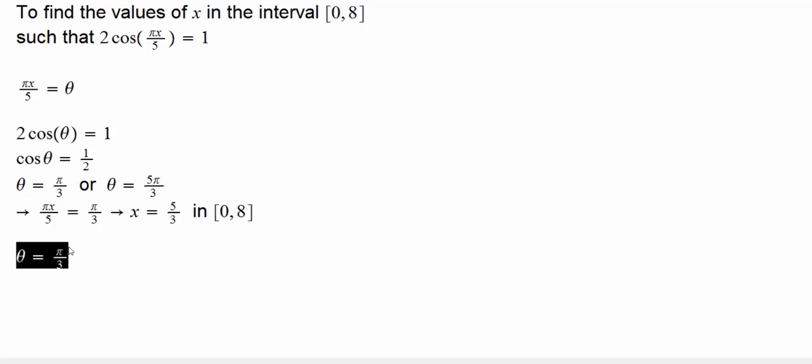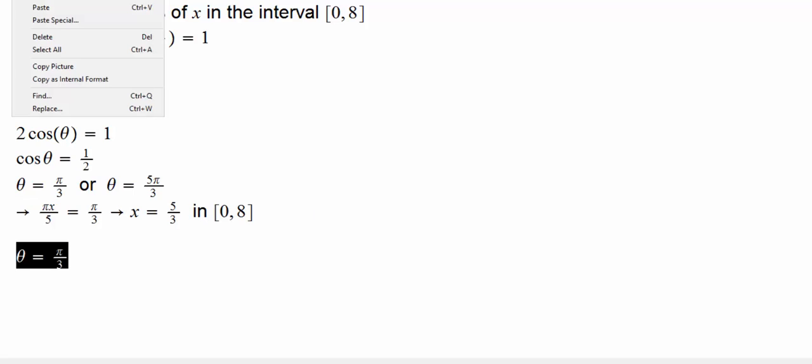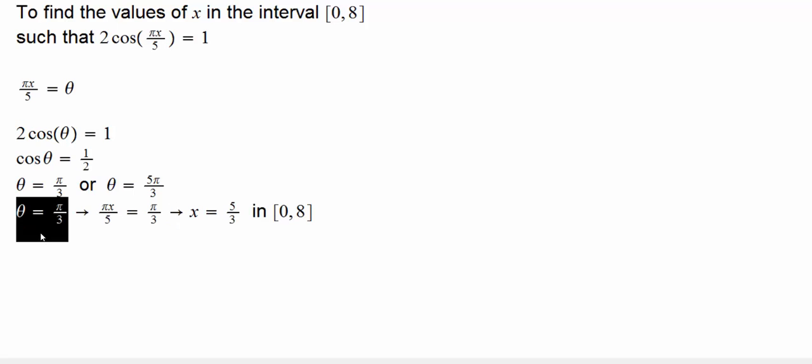The other value is theta equals 5 pi over 3. What is that going to give us? That is going to give us that pi x over 5 is 5 pi over 3, which will give us x equals how much?